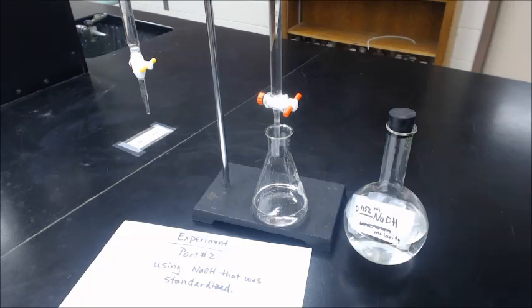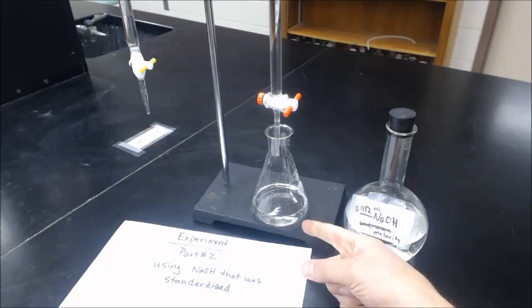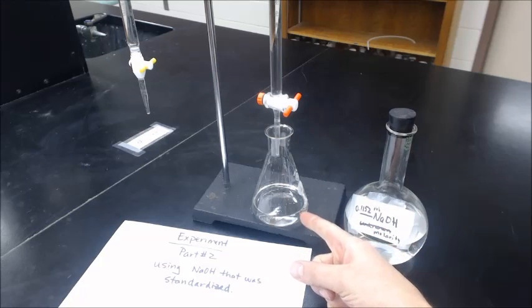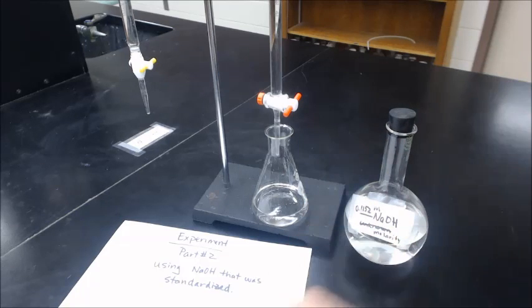So if we know the grams of the acid that were weighed out, and we know the moles because it's equal to the moles of sodium hydroxide, you can figure out the molar mass by doing the grams divided by moles.